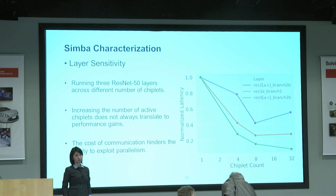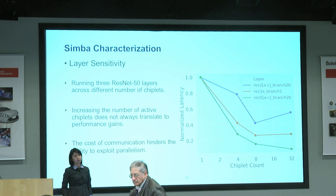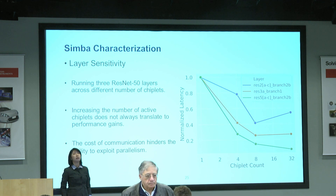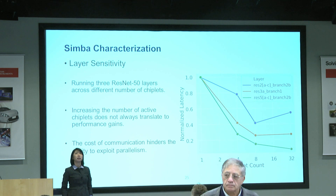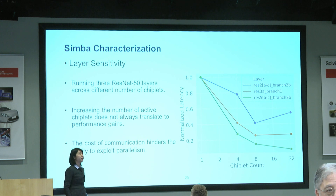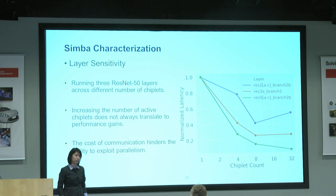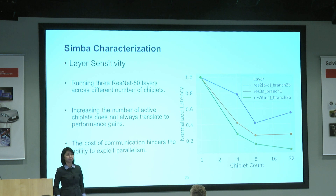Follow-up question: what's the maximum number of layers for ResNet-50 that you can implement per chiplet? The answer: our entire SRAM size per chiplet for the weight buffer is roughly 500 kilobytes, so it's basically whatever can fit into the weight buffer size.